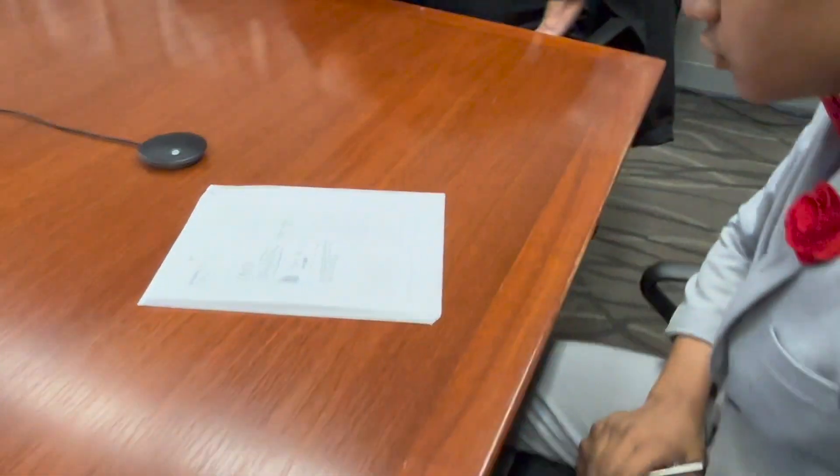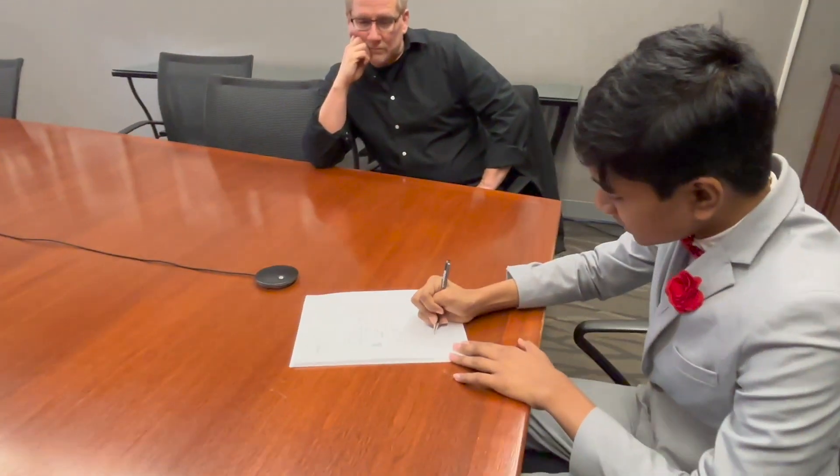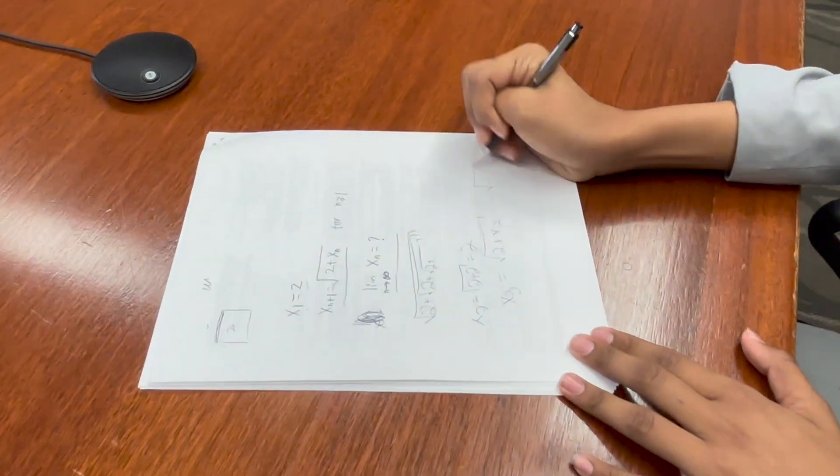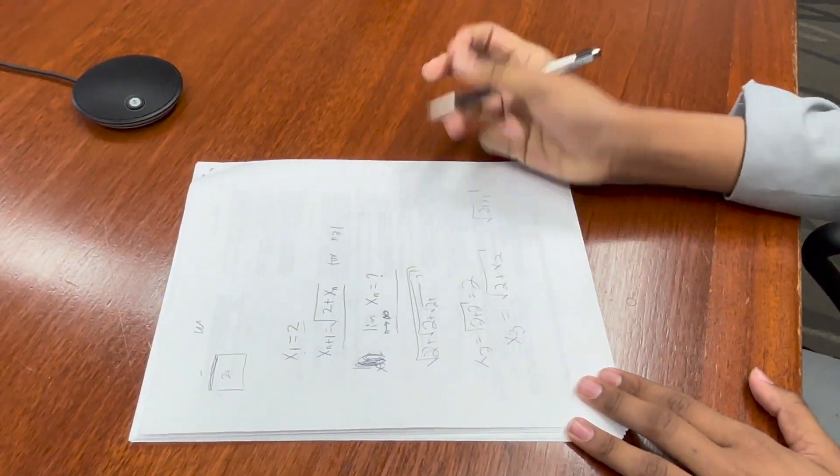...the square root of 2 plus xn for n. Hey wait a second, it's 2 because x2 is just going to be the square root of 2 plus 2 which is 2, and then x3 is going to be the square root of 2 plus x2, which is equal to the square root of 2 plus x1.